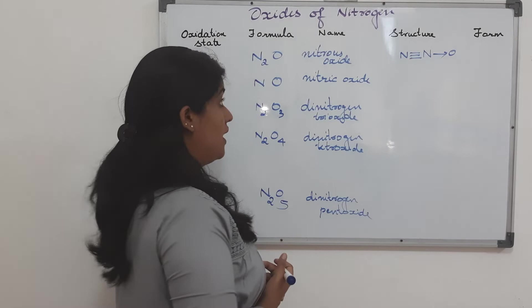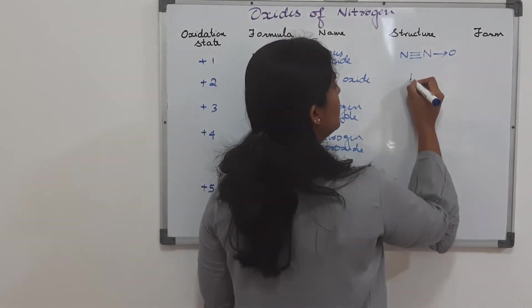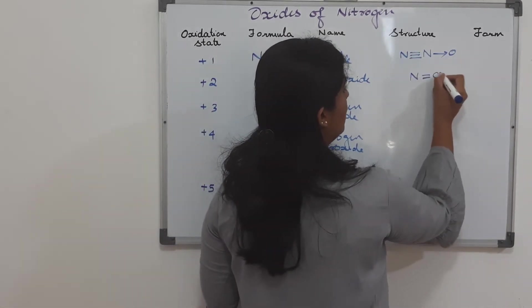Second one is nitric oxide, which is NO. So, it's just N double bonded oxygen.